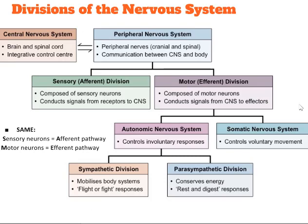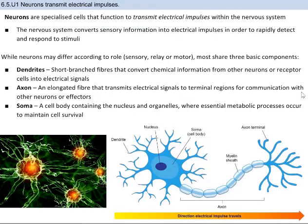Looking at further divisions of the nervous system, the peripheral nervous system breaks down into sensory and motor divisions, and the motor division can be broken down even further. One way to remember the breakdown is the word SAME: sensory neurons are the afferent pathway and motor neurons are the efferent pathway. The overall function of the nervous system is to transmit information via electrical impulses, allowing the body to respond to stimuli such as touch, pressure, pain, temperature, light, chemicals, sounds, and head position.